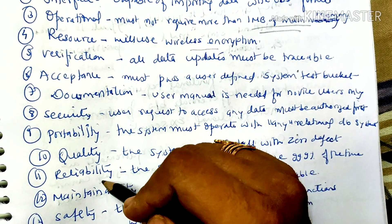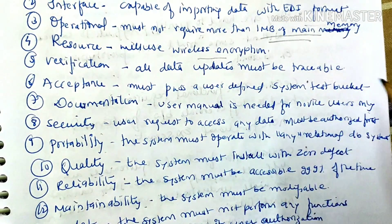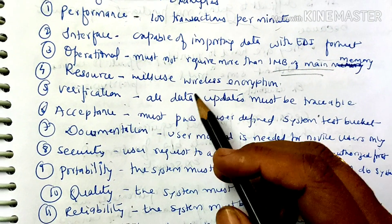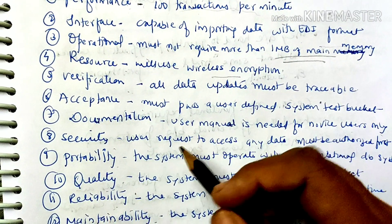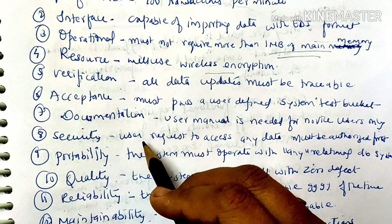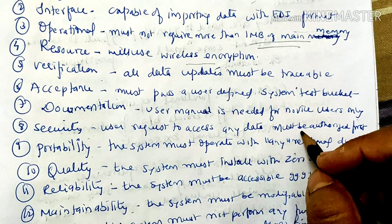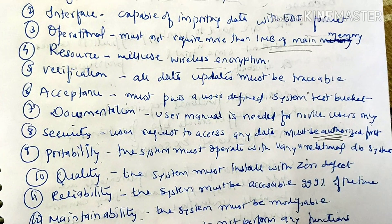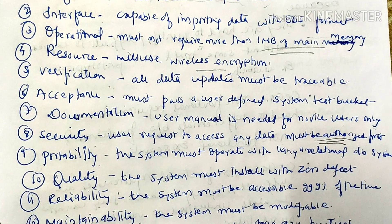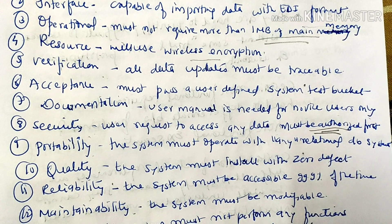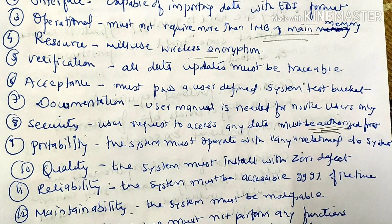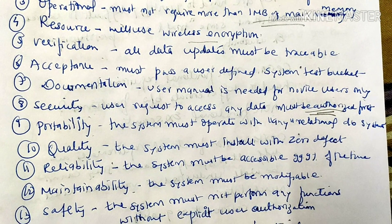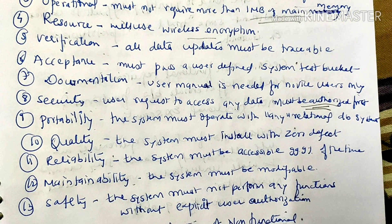All these features are implicit — that is, they are expected from the customer. For example, security: the user request to access any data must be authorized first. The customer always wants that only an authorized person can use the data. Portability means we should be able to move the system from one platform to another.